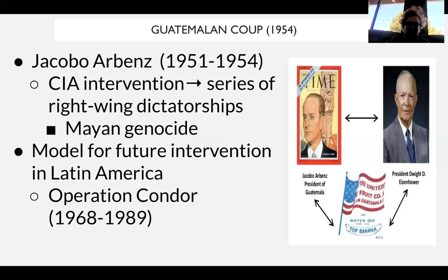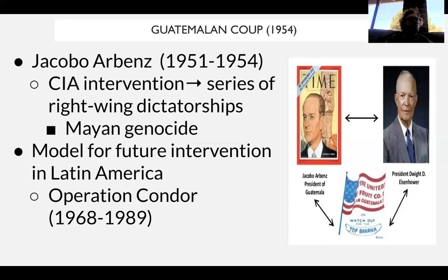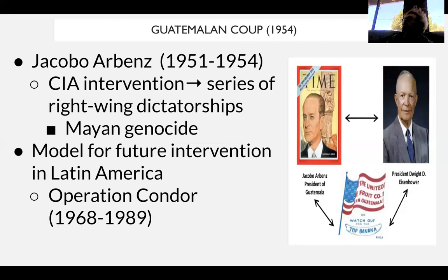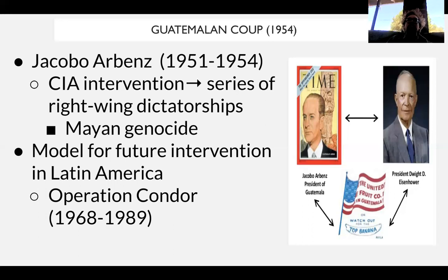This model of CIA intervention is seen through a few operations. One is called Operation Mongoose — how the CIA tries to overthrow the socialist Cuban government. Another major operation is Operation Condor in the 1960s through the 1980s — a series of CIA supports for right-wing anti-communist dictatorships across Latin America.